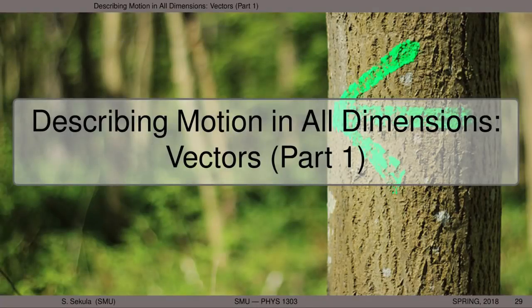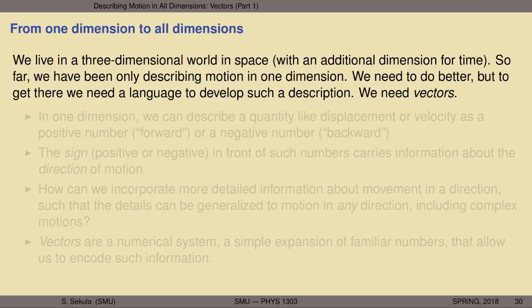Let us begin to learn to describe motion in all spatial dimensions. This lecture is part one of a much larger lecture on vectors, but we won't need to know everything about how to use vectors right now — we will merely define them and learn how to handle some basic operations. We want to go from one dimension to all dimensions. We live in a three-dimensional world in space, and there is an additional dimension for time. So far, all we've been doing is describing motion in only one dimension — think about the train moving forward or backward along a track.